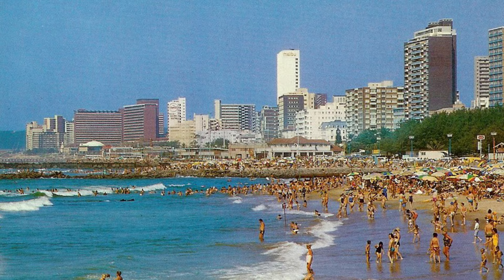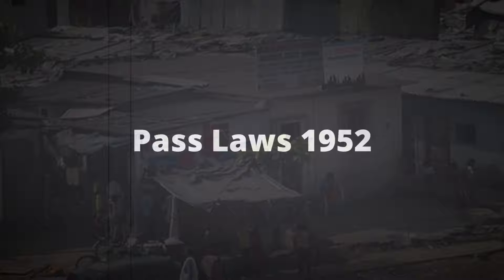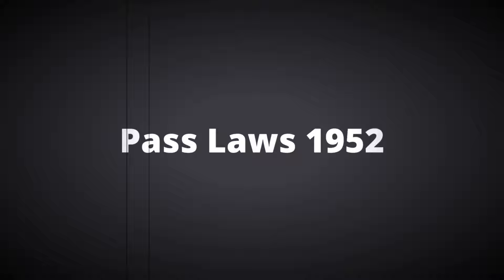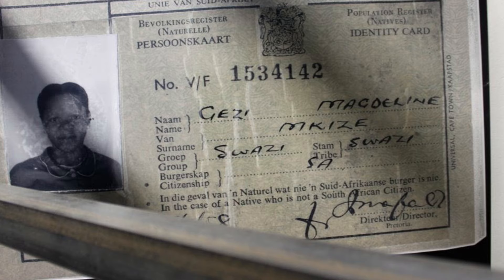More than 600,000 blacks, Indians and coloureds were removed from their homes in areas classified for white occupation. Pass laws played a pivotal role in South Africa and by the time apartheid rolled in, it became an essential tool for segregation. It required black South Africans over the age of 16 to carry a pass book at all times and this severely limited their movement. Forgetting to carry the pass, losing it or having it stolen resulted in arrests and imprisonment. It quickly became the most hated symbol of apartheid.